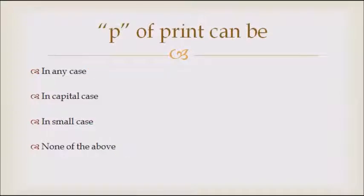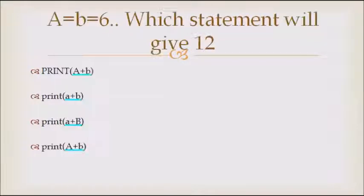Let's see the next question. a is equal to b is equal to 6, which statement will give us 12? Just note down one thing: a is capital and b is small. So we have a as capital, b as small in these two cases, so the middle two will be eliminated. Now if we see the print statements, the print 'p', in fact everything is capital here, so the correct answer in this case is this one.